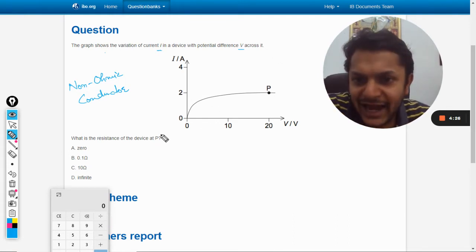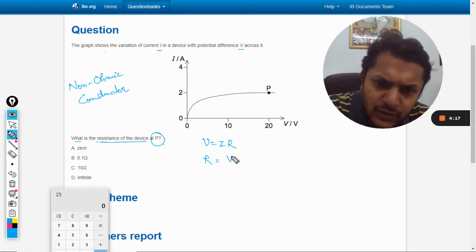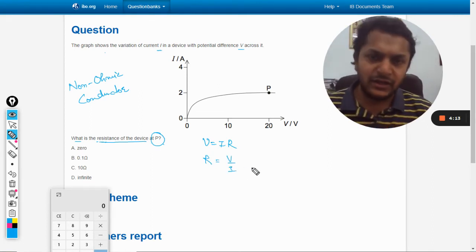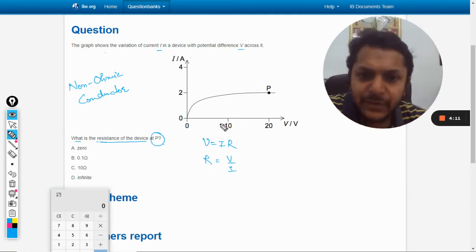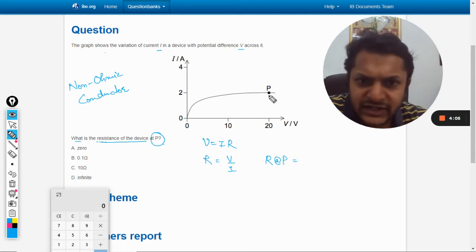So at P, what is the resistance of the device at P? We need to find the resistance. V is equal to IR, R is equal to V by I, although it will be instantaneous and variable. At P, resistance will be given by the voltage at P.